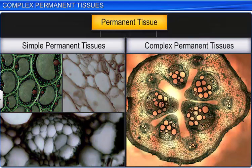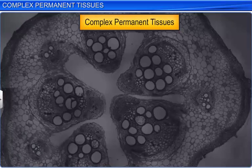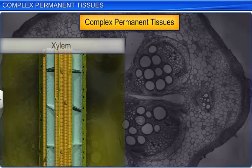Complex permanent tissues are a group of more than one type of cells that have a common origin and work together as a unit. There are two types of complex permanent tissues in plants: xylem and phloem.